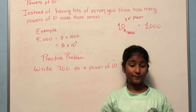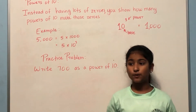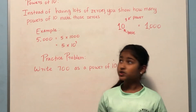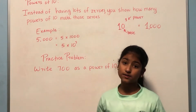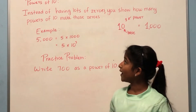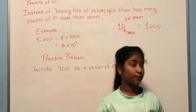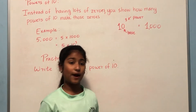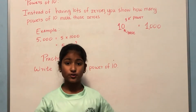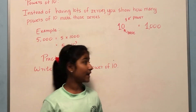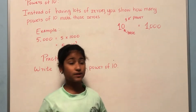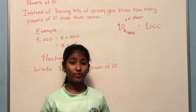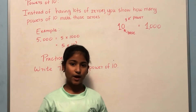Let's learn about the powers of ten. Previously we learned about exponents and we know that there's a base and power to exponents. The same goes for powers of ten. So instead of having lots and lots of zeros, you show how many powers of ten make those zeros. Ten is the base and three is the power — that's a power of ten. The power shows how many zeros are in that number, so ten to the power of three has three zeros and equals one thousand.